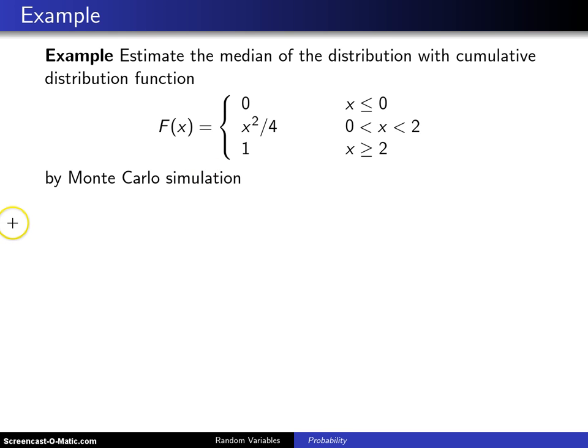Now before we use Monte Carlo simulation to solve this problem, the analytic solution is fairly easy, so let's go through with that first. In order to find a population median, we can take the cumulative distribution function, which in this case is x squared over 4,